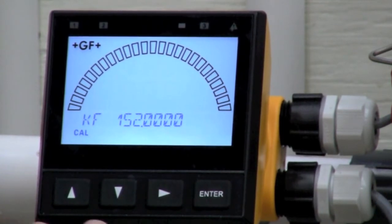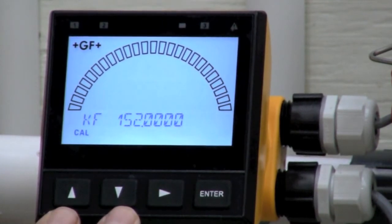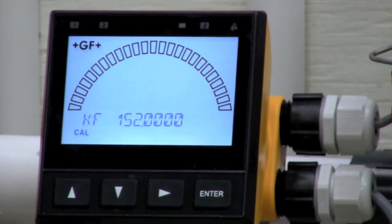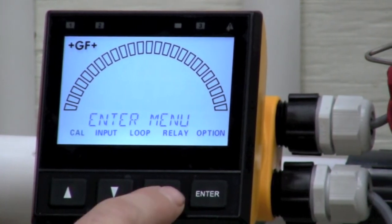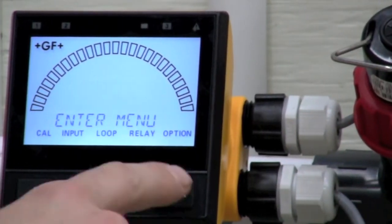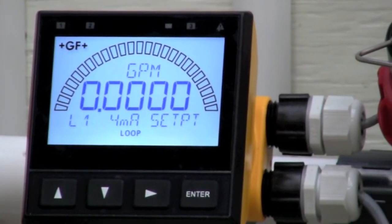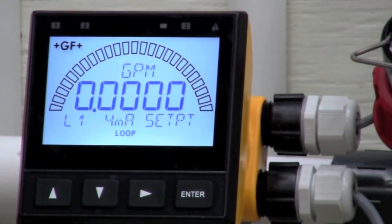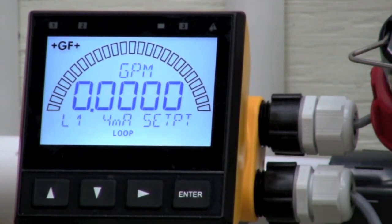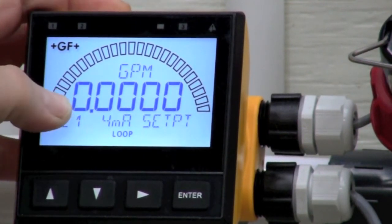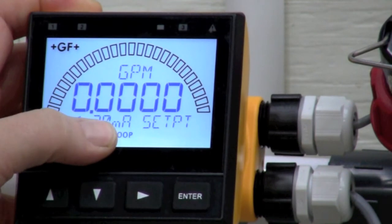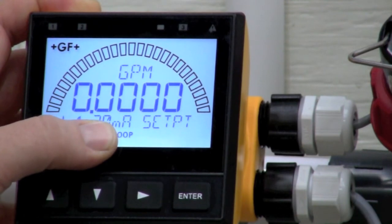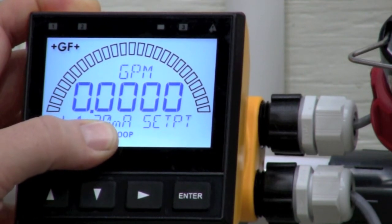To back up, I'm going to simultaneously press both of the up and down arrow. Every time you do this, it backs up one menu. I want to set my 4 to 20. I'm going to set my 4 to 20 for 0 to 15. Right now, 4 milliamp, factory default, 0 GPM. I agree with that. I'm not going to change it. I'm going to scroll down. 20 milliamp. I want my transmitter to output 20 milliamps when I hit 15 GPM.